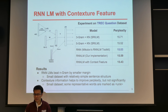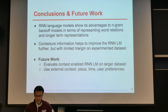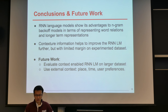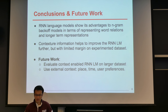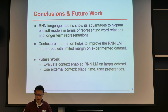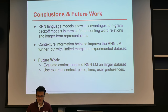In conclusion, we evaluated the recurrent neural network language model compared to the n-gram model, and by introducing the context feature, we further improved the RNN language model performance, but with very limited margin on this small dataset. In the future, we would like to evaluate the context model on a larger dataset, and also explore different types of context. That's our presentation. Thank you.